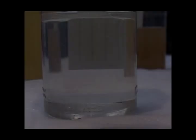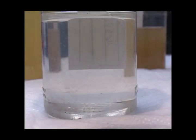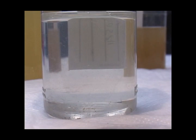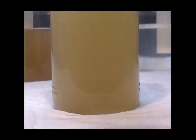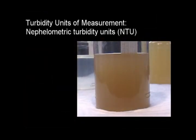Turbidity is a measure of water clarity. Higher turbidity means the water is less clear and more materials are suspended in the water. In the state of Washington, turbidity is the primary test used to look at construction stormwater discharge. Turbidity is the measure of light scattered due to the presence of particles in the water. It is documented in Nephelometric Turbidity Units, or NTUs. The muddier the water, the higher the levels of turbidity will be.